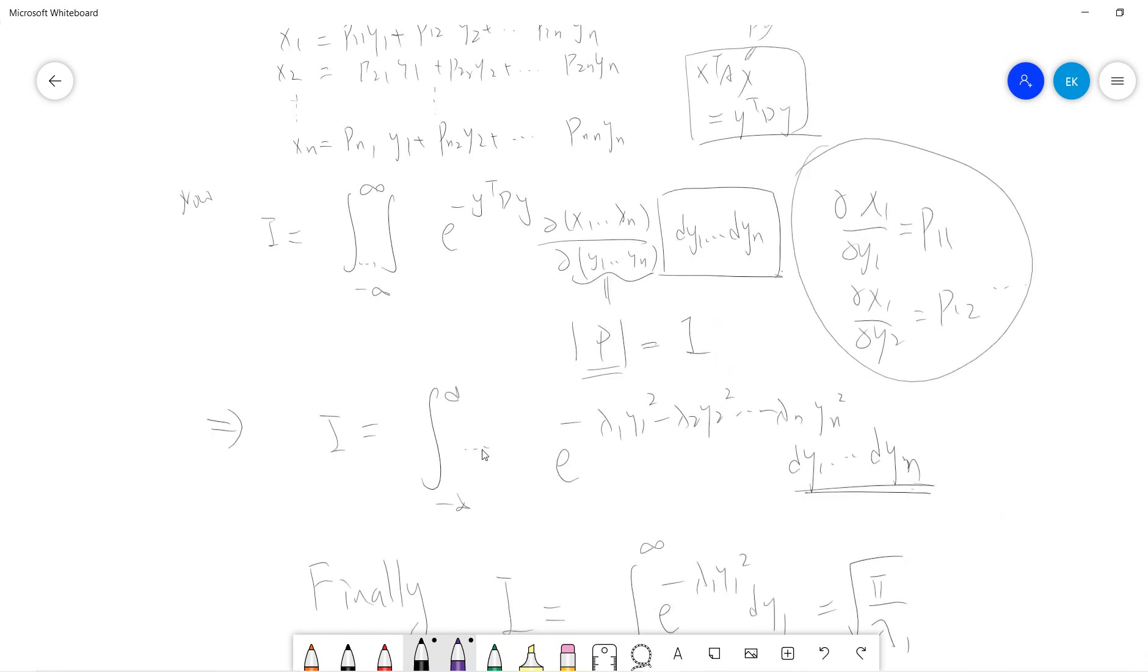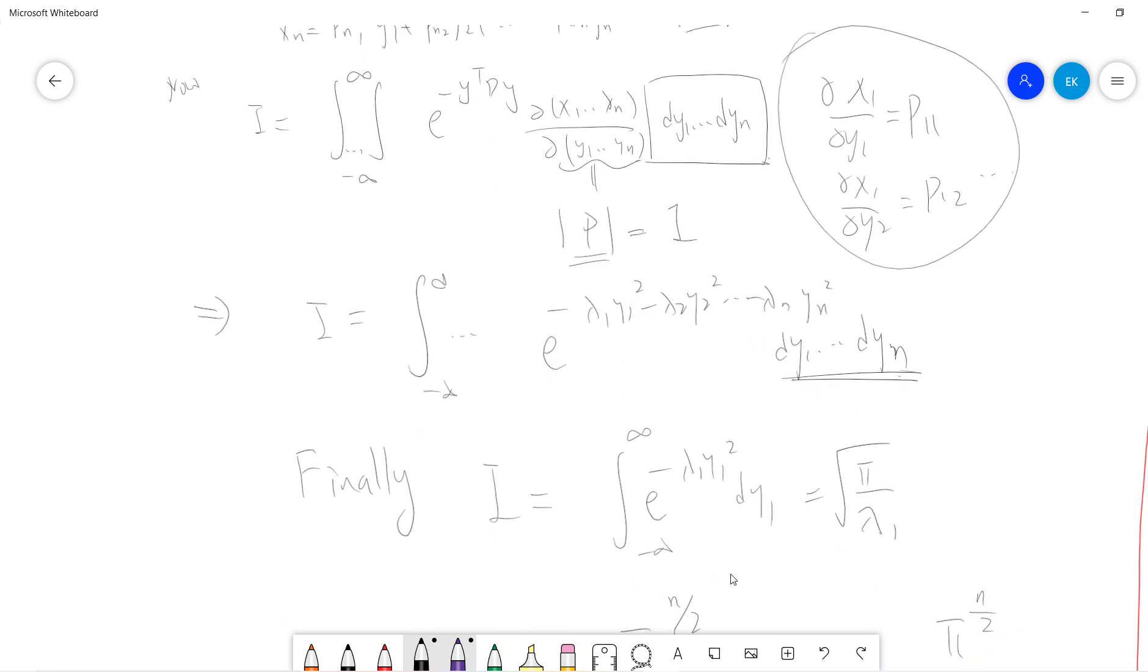So this I will be the integral of exponential lambda 1 Y1 squared minus lambda 2 Y2 squared, where lambda 1, lambda 2, up to lambda n is the eigenvalues of this original A. So this is DY1, DY2. And now we know that each exponential minus lambda i Yi squared DYi is basically this Gaussian integral. And if you don't know that, I will post my gamma function lecture below, so you can prove this.